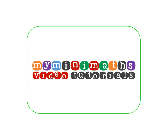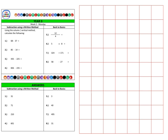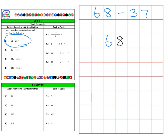Hello and welcome to myminimaths.co.uk video tutorial. Today we're going to be subtracting a two-digit number from a two-digit number, and a three-digit number from another three-digit number. The first question is 68 take away 37. We're going to write out our numbers in the tens and units columns and subtract 37.